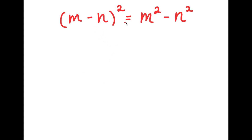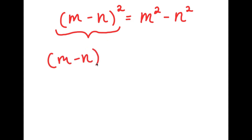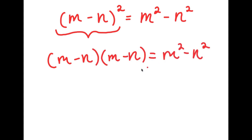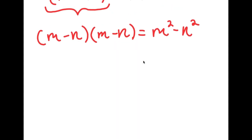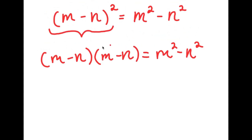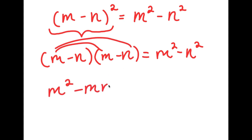In this problem, I have m minus n squared is equal to m squared minus n squared. To solve, I'll start by rewriting m minus n squared as m minus n times m minus n. Expanding by distributing m gives m squared minus mn, and distributing negative n gives negative mn plus n squared.